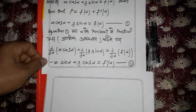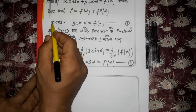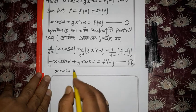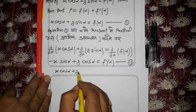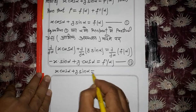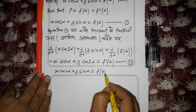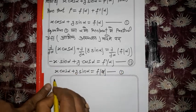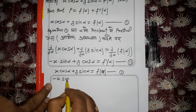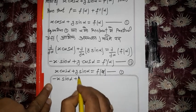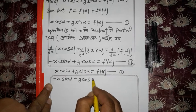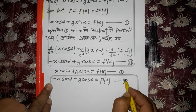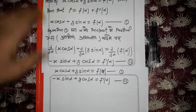Equation 1 is: x cos α + y sin α = f(α). Equation 2 (derived by differentiating w.r.t. α) is: -x sin α + y cos α = f'(α). Now I need to find x and y from these two equations.